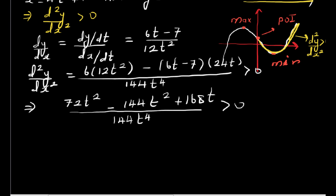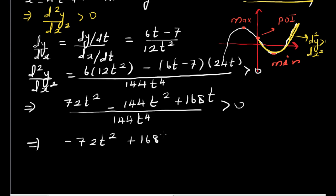Multiplying both sides by 144t⁴ and simplifying the numerator, we get −72t² + 168t > 0.